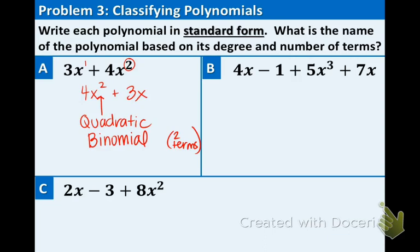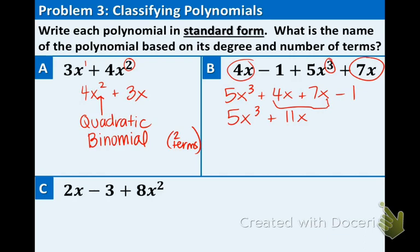Part B, 4x minus 1 plus 5x to the third plus 7x. The biggest exponent is the 3, so we're going to write that term first. Now, hopefully you're realizing that there are a couple like terms. I'm going to put them next to each other in the middle step and then obviously in the next step we're going to combine them. So 5x to the third plus 11x because we just combined these guys right here minus 1. So combine like terms.